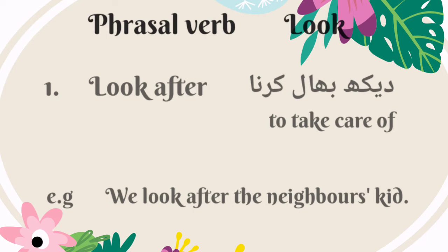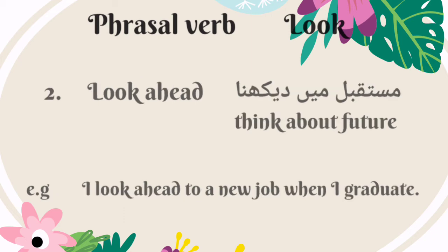Now let's have a look at the phrasal verbs of the word 'look.' The first phrasal verb is 'look after.' It means to take care of — Urdu mein is ka matlab hai deyk bhaal karna. For example: we look after the neighbor's kid. The second phrasal verb is 'look ahead.' It means think about the future — Urdu mein is ka matlab hai mustaqbil mein deykhna. For example: I look ahead to a new job when I graduate.